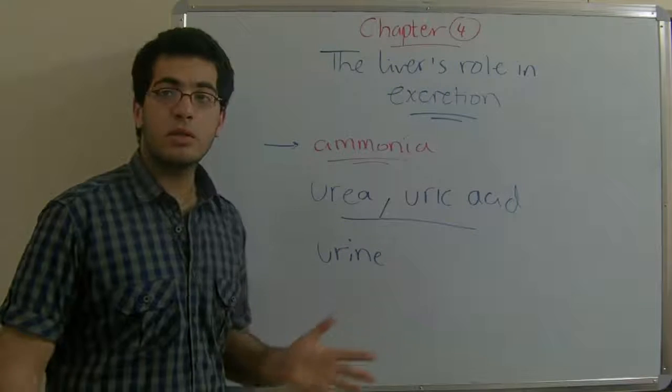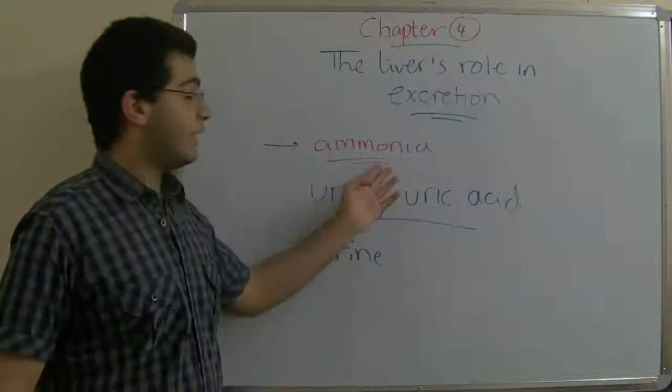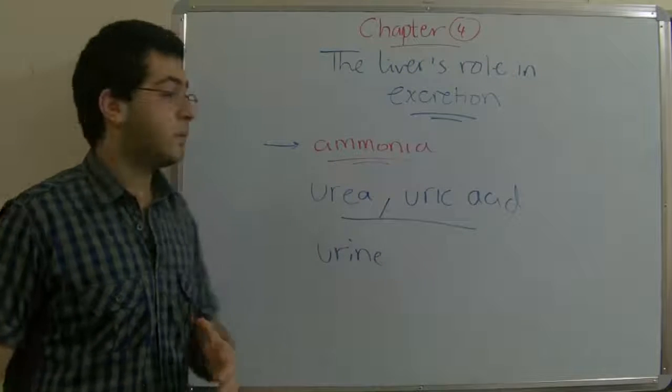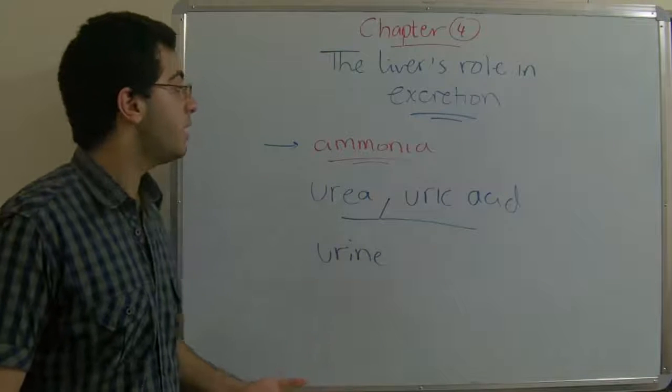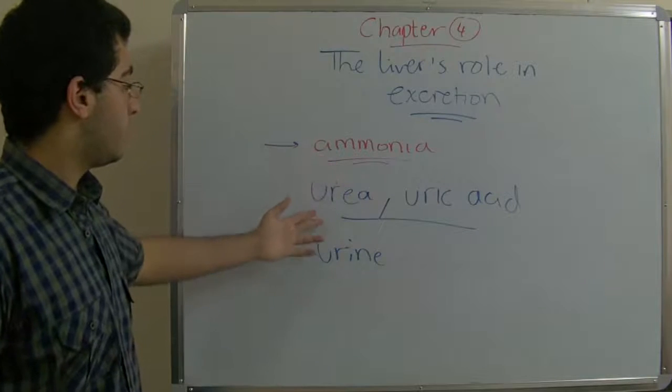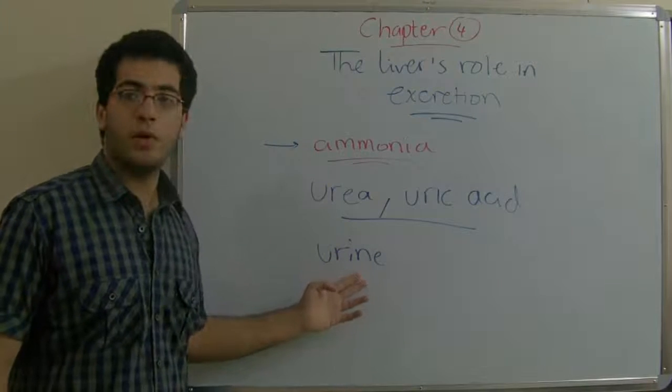Amino acids are divided by enzymes of the liver into ammonia and the remaining part of carbon and hydrogen. Carbon and hydrogen are oxidized in order to produce energy. And ammonia is changed into urea and uric acid, which is expelled outside the body in the form of urine.